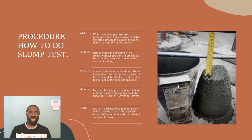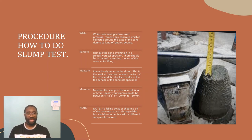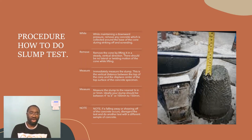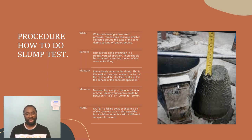While maintaining downward pressure, remove any concrete collected around the base of the cone during the striking off. Then remove the cone by lifting it steadily in a vertical direction, ensuring there are no lateral movements and no twisting of the cone while lifting, because you do not want to shift the concrete — that would affect the reading of your slump. Immediately measure the slump, which is the vertical distance between the top of the cone and the displaced center of the top surface of the concrete specimen.